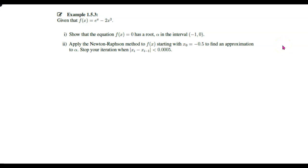Consider this problem here. You are given a function f(x) in the form of exponent of x minus 2x squared. First, show that f(x) = 0 has a root alpha in the interval negative 1 to 0. And then after that, apply the Newton-Raphson method to find the root of f(x), starting with x₀ equal to negative 0.5.